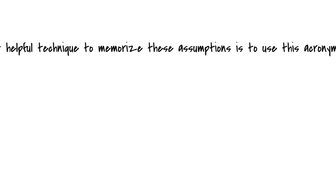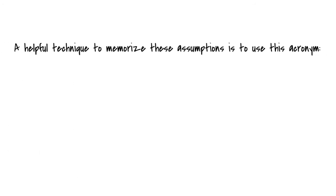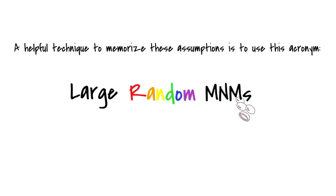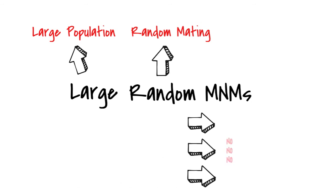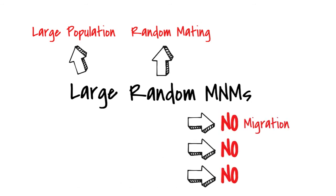A helpful technique to memorize these assumptions is to use this acronym: Large Random M&Ms. The 'large' is for large population, 'random' is for random mating, and for the next three, you put 'no' in front of them — so, no migration, no natural selection, and no mutations.